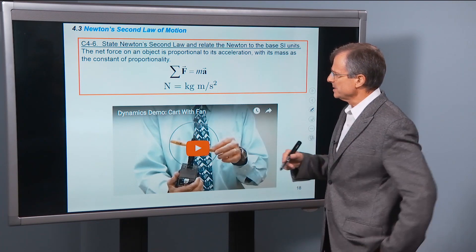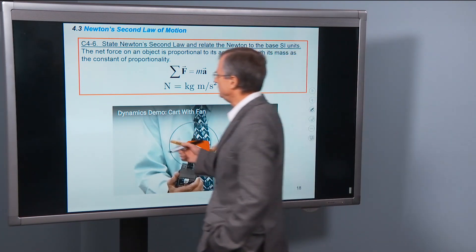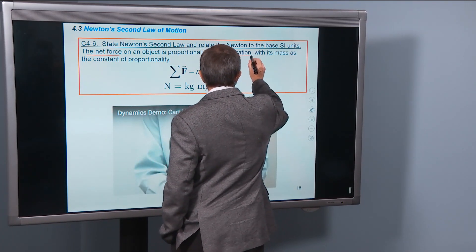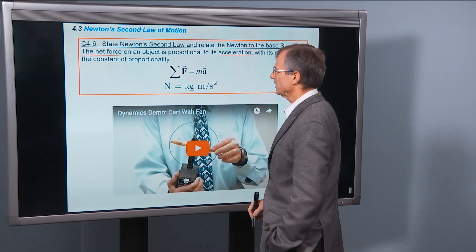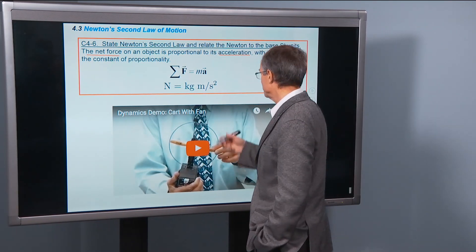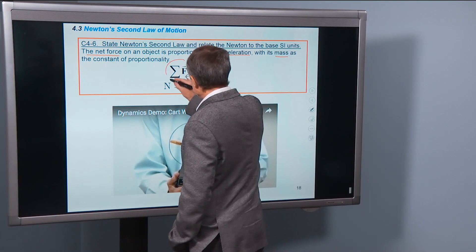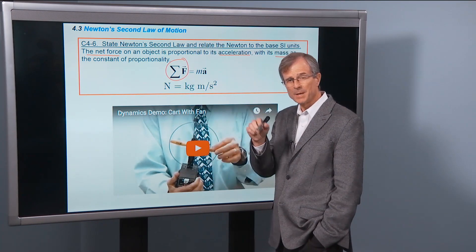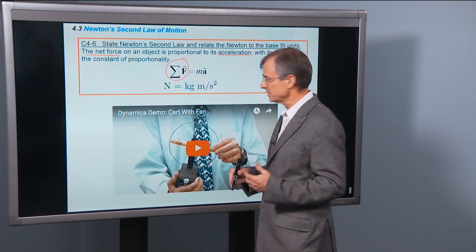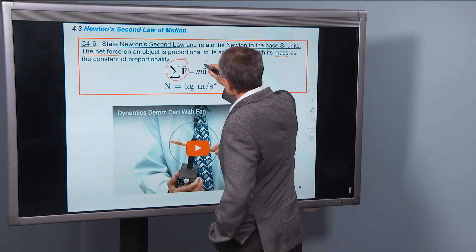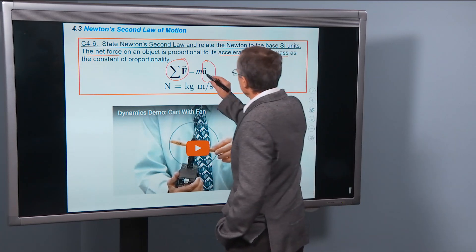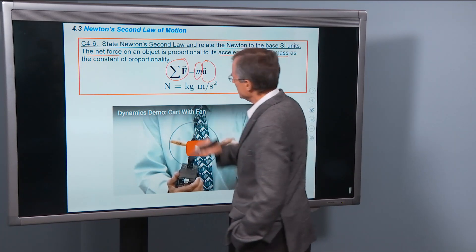This is Newton's, the statement in words of Newton's second law. The net force on an object is proportional to its acceleration, with the mass as a constant of proportionality. That's a statement in English. Here's a statement in Greek and symbols. This is the net force, sum of forces, sigma. I just say the sum of forces or the net force. It is proportional to the acceleration, A, from chapter 3. And the constant of proportionality is the mass m.